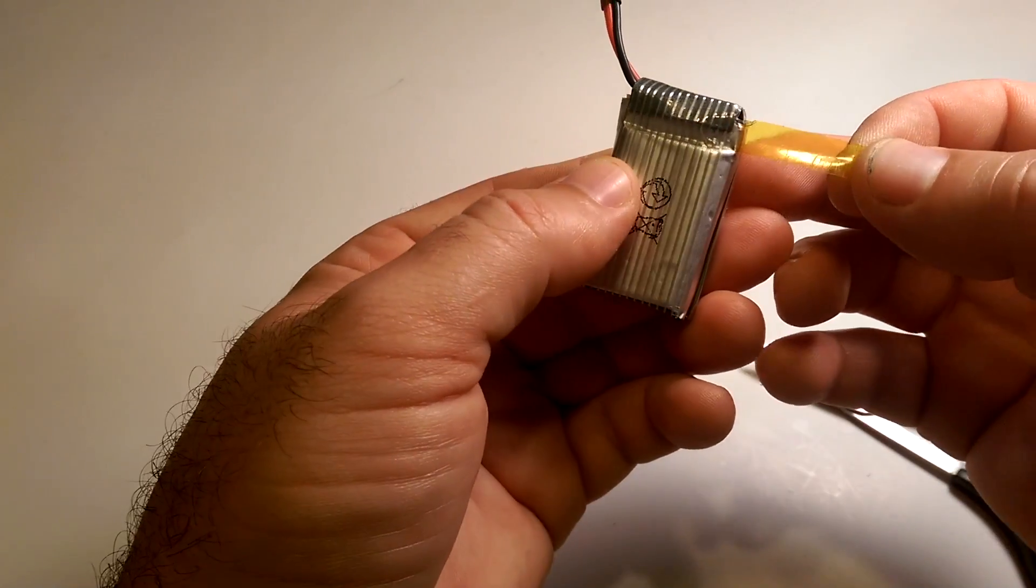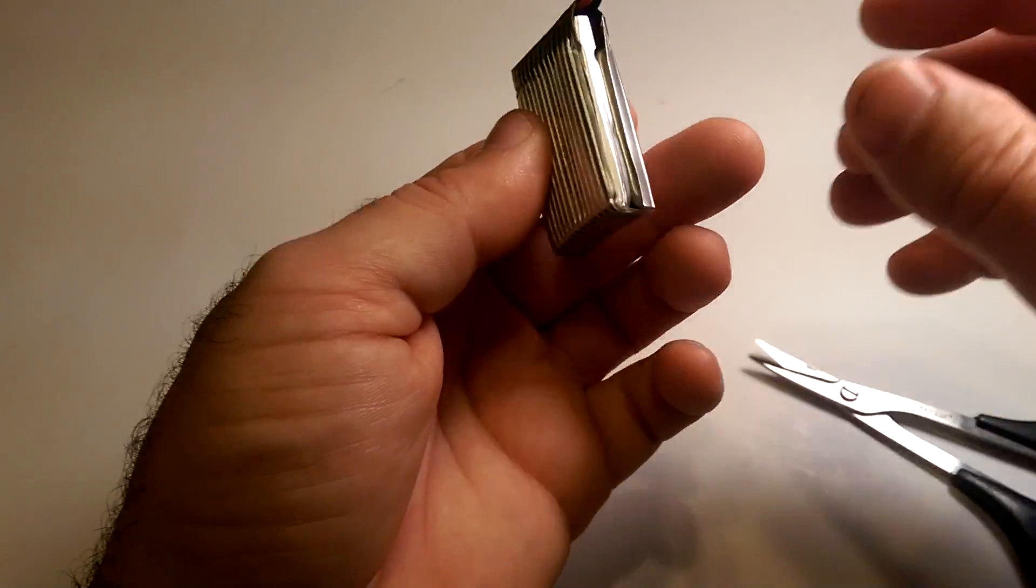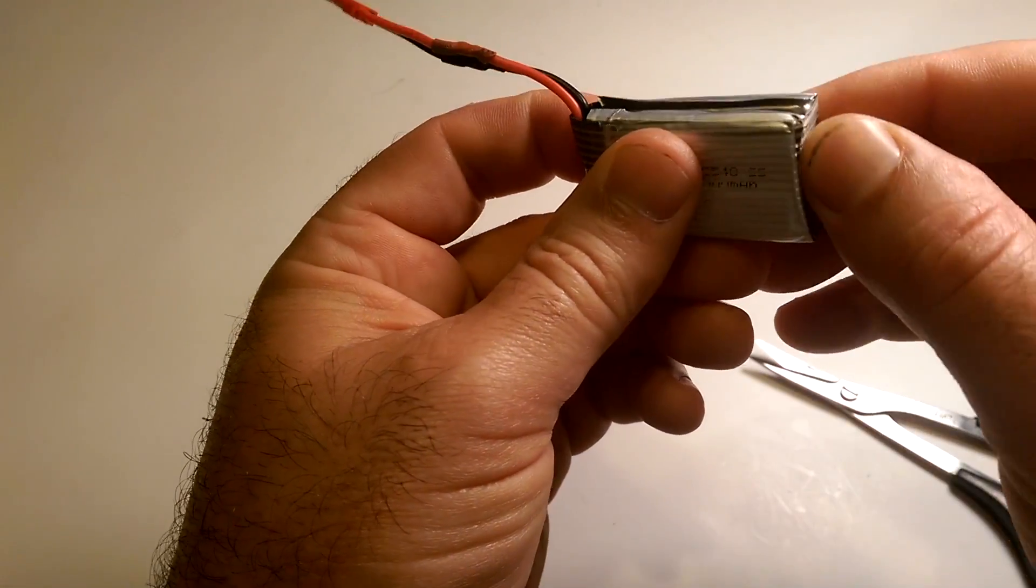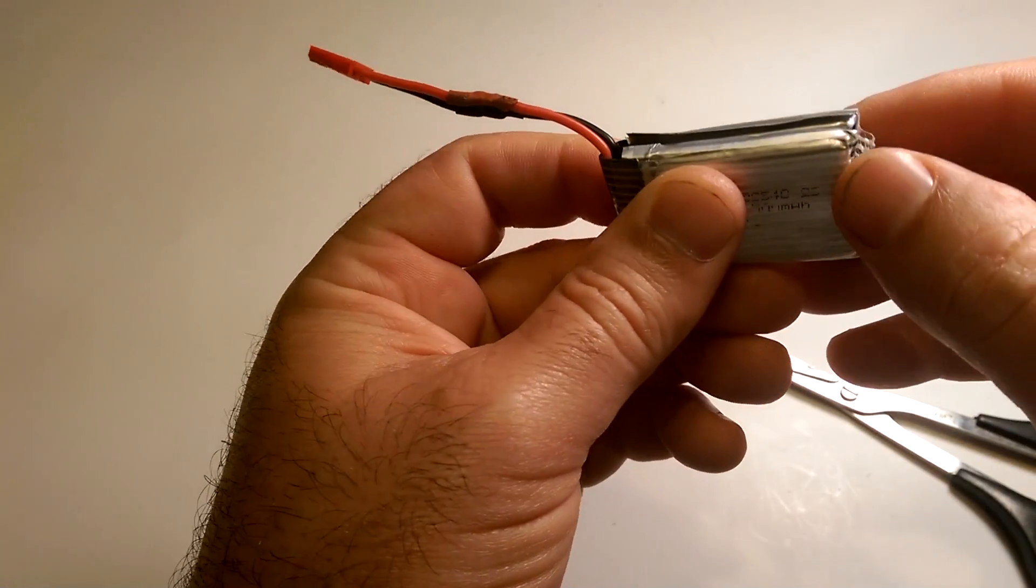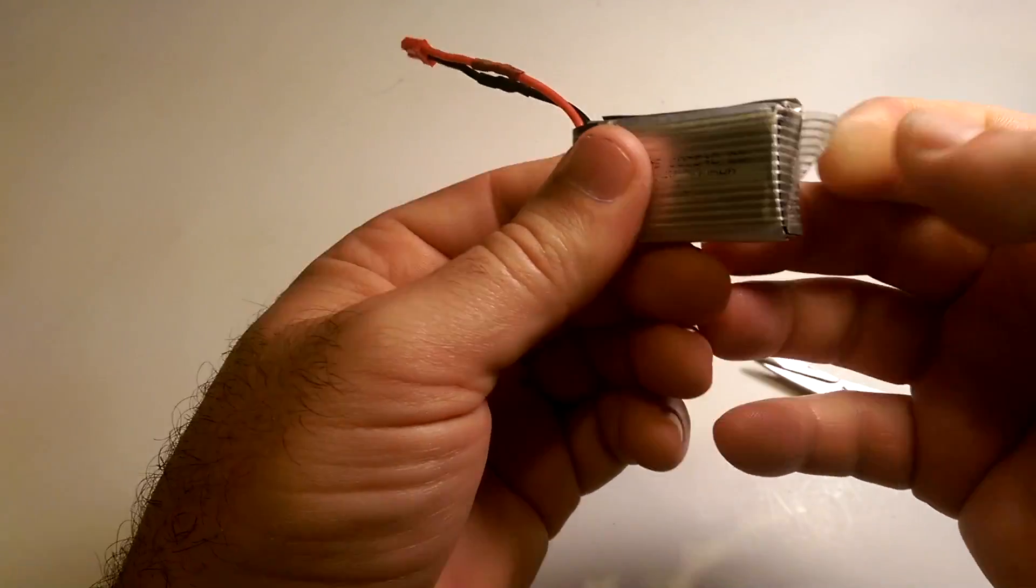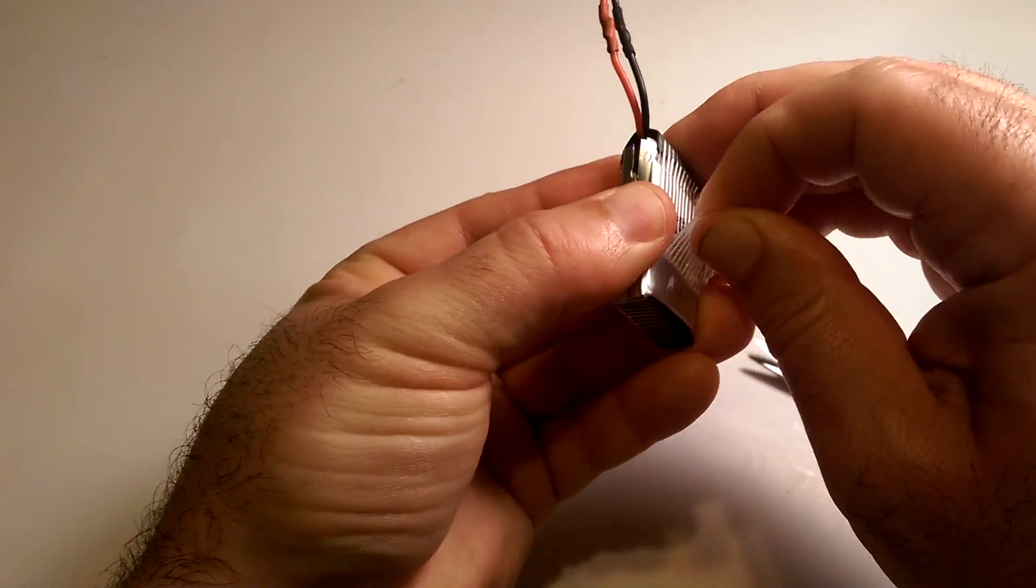Anyway, so you cut this little yellow band here and you just kind of peel it off there. Secondly, what I do is there should be a joint in the tape they put on here at the bottom in this case. And you just peel this tape away.